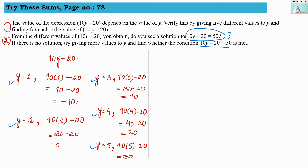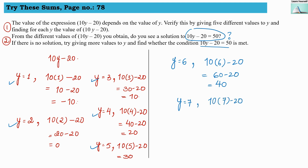So let us take y equals to 6 for the second question. In this expression, 10 into 6 minus 20 gives 60 minus 20, so the answer is 40. Let us take y equals to 7: 10 into 7 minus 20 gives 70 minus 20, and the answer is 50. So when we take y equals to 7, this expression gives us 50, which is our required solution.